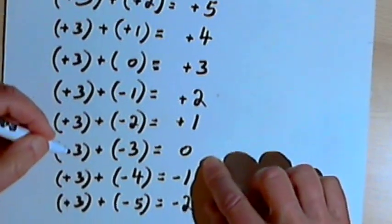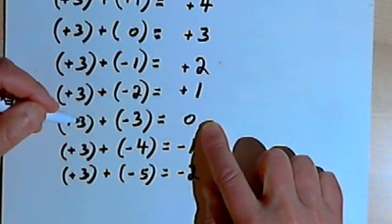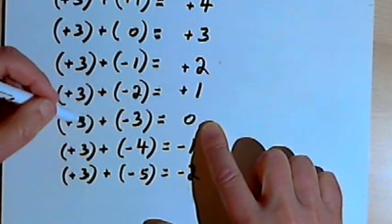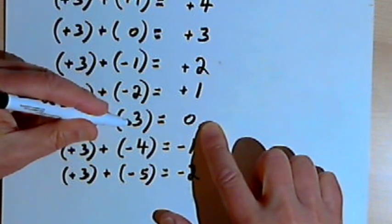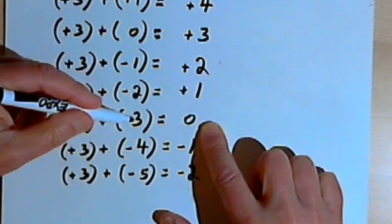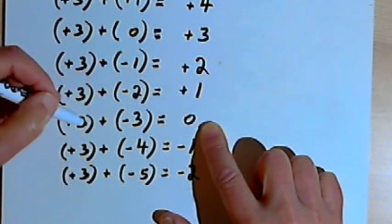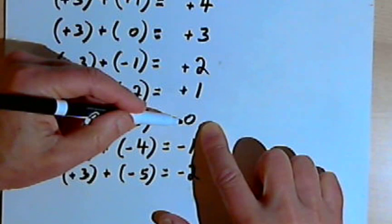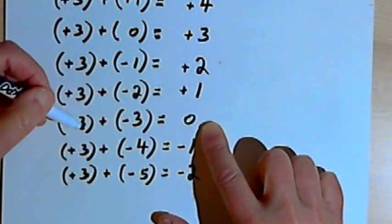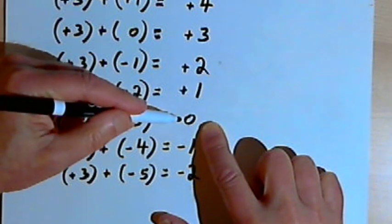Now I come down to positive 3 plus negative 3, and I get 0. Positive 3 and negative 3 are what we call additive inverses — a number and its opposite. Like positive 3 and negative 3, they add together to make 0. So any time we have the same number but with two different signs, the result is going to be 0.